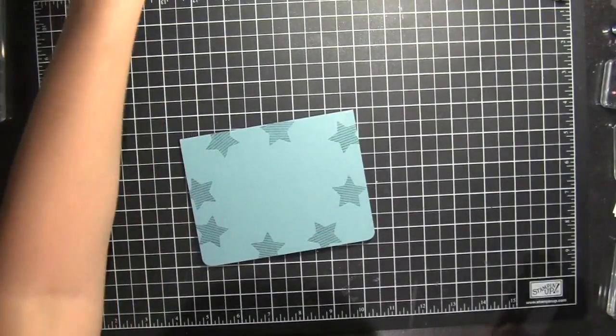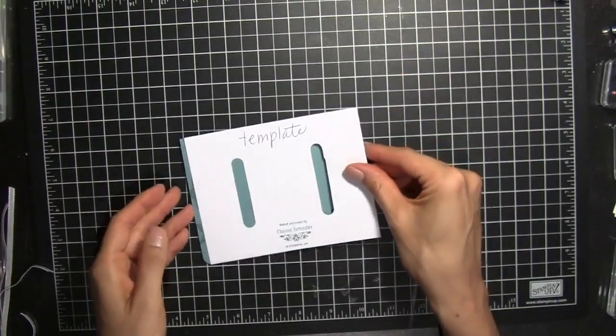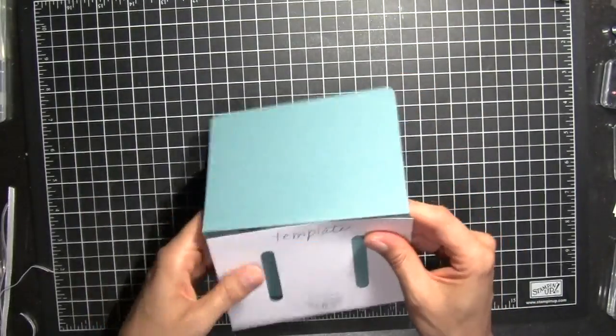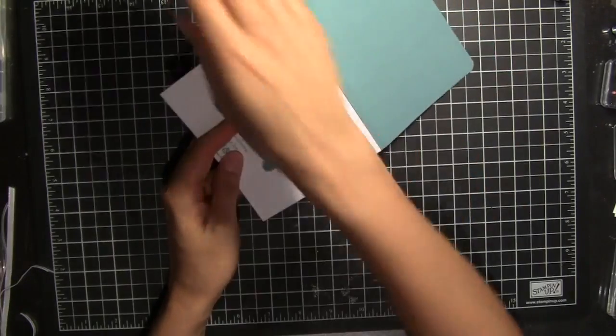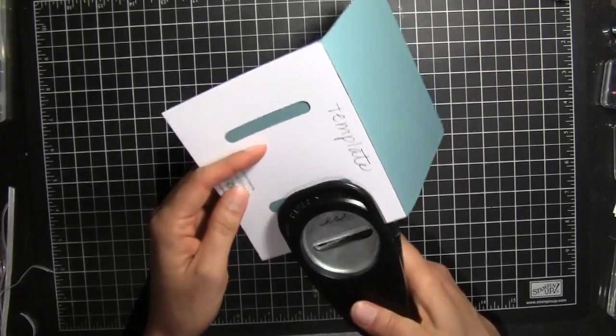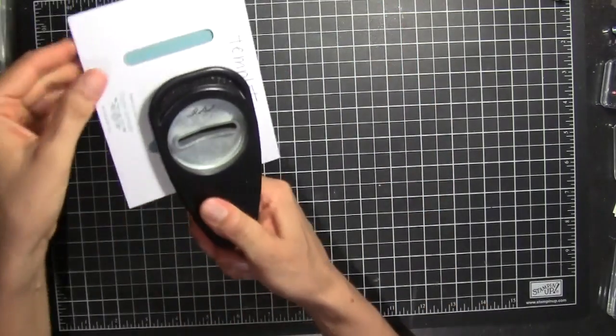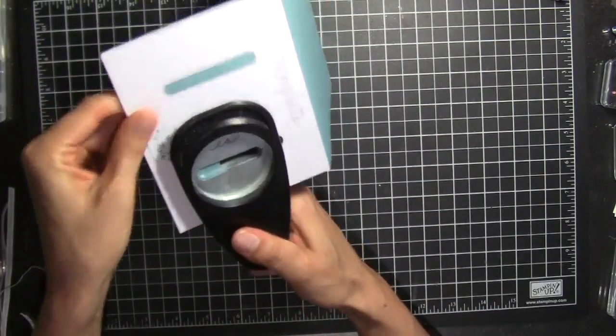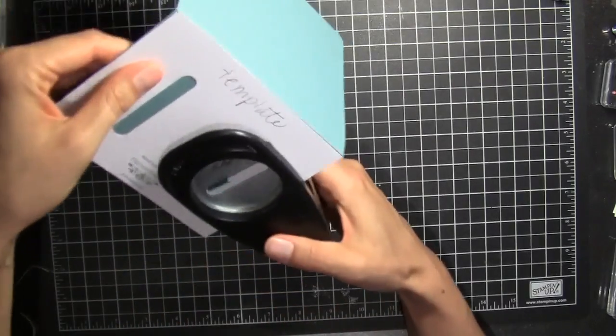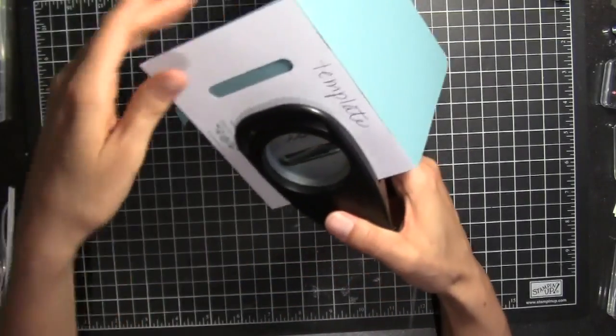Then I have a little template guide. I'm going to use my Word Window Punch to create the grooves which the top piece is going to slide on. I'm going to place the Word Window Punch all the way in as far as it can go. Punch once and scoot it over and punch again.